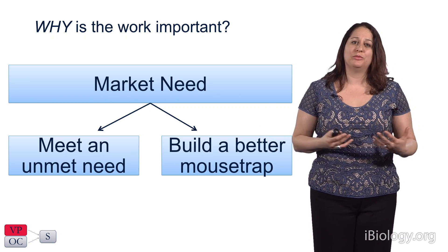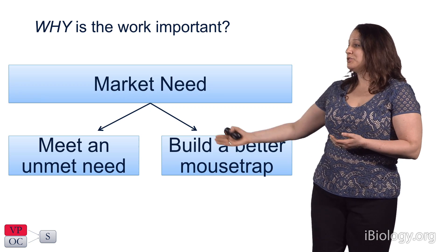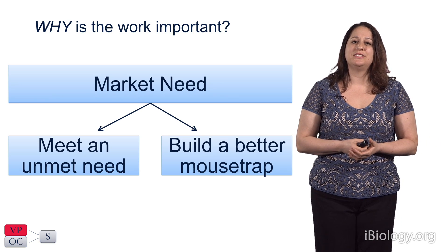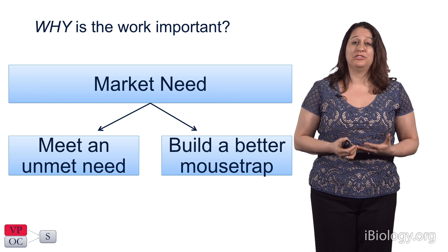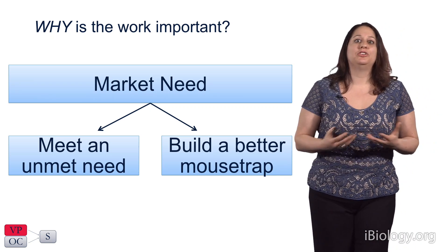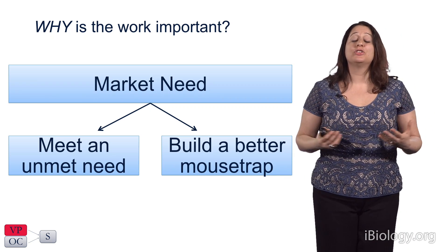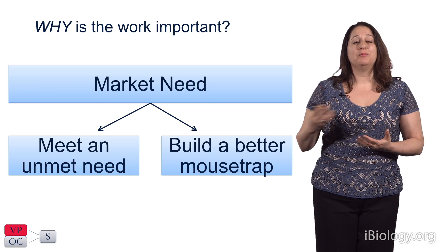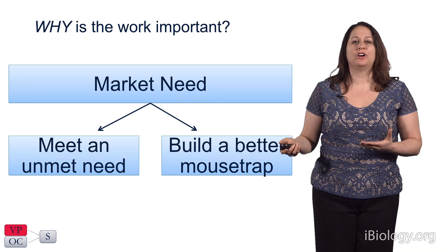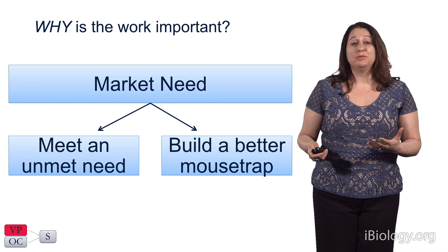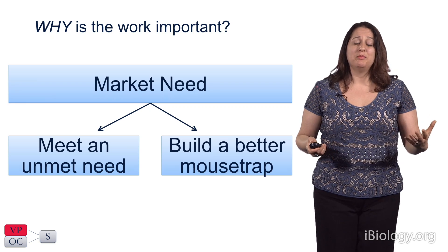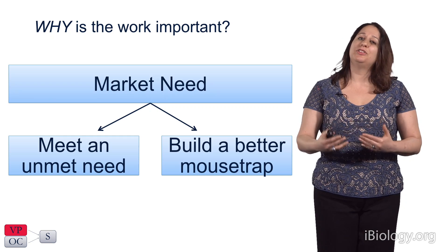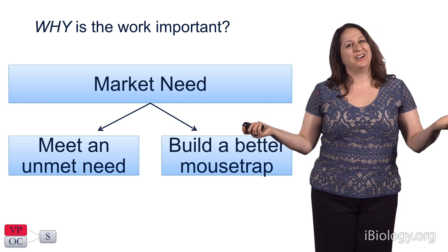There are a couple different forms of market need. One option would be to meet an unmet need — for example, a disease with absolutely no treatments available today. Alternatively, the goal may be to build a better mousetrap. Perhaps there are treatments for that disease today, but they're not very safe or cause toxicity, and a company may set out to create similar drugs but with less toxicity. Similarly, in the generic market, a company may make exactly the same product but sell it for cheaper — that's generic drugs.